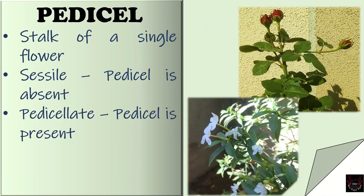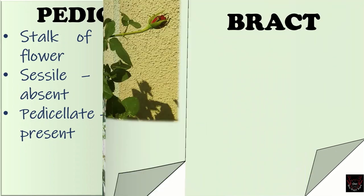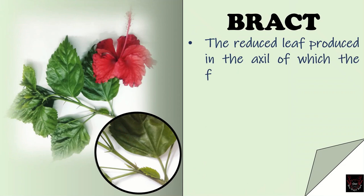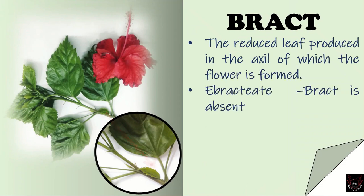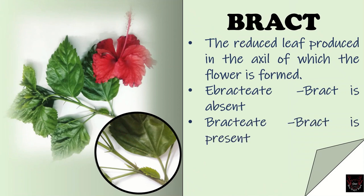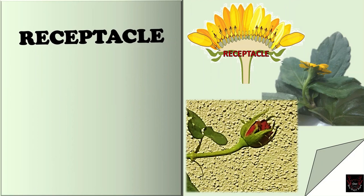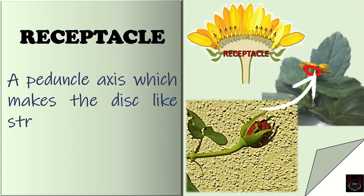When pedicel is present, the flowers are called pedicellate. Bract is the reduced leaf in the axil of which the flower is formed. If bract is absent, the flowers are called ebracteate, and if bracts are present, flowers are called bracteate.